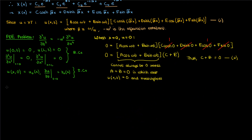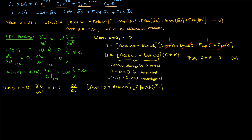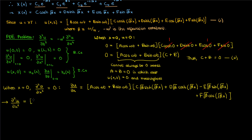Next we'll apply the second derivative boundary condition at x equals 0, where the second partial of u in x is 0. To apply this boundary condition we'll have to take the partial derivative of u in x twice. The first partial of u with respect to x has the time function as a constant outside, times c times the square root of beta times the hyperbolic sine of square root of beta x, plus d square root of beta hyperbolic cosine of square root of beta x, minus e square root of beta sine of square root of beta x, plus f square root of beta cosine of square root of beta x. The second partial of u in x is then the following, where the time function again behaves as a constant.